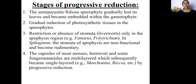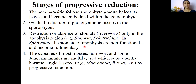The various stages of this regressive evolution or progressive reduction of sporogenous tissues can be summarized as follows: the semi-parasitic foliose sporophyte gradually lost its leaves and became embedded within the gametophytic tissue; there was a gradual reduction of photosynthetic tissues in the sporophyte; and there was a restriction of stomata, or they may be totally absent in a few genera.